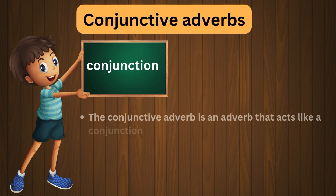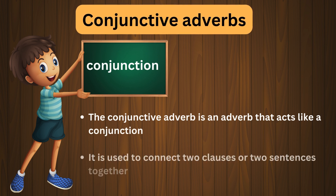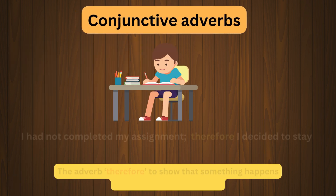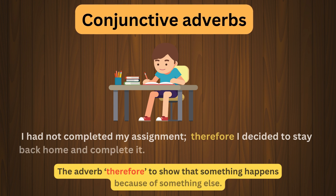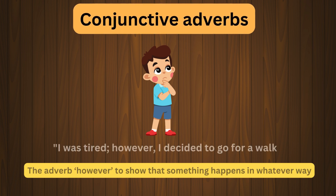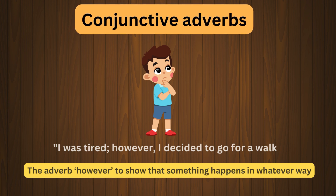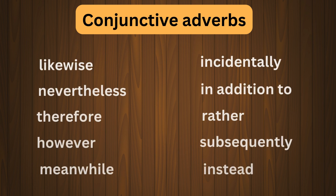Next we see conjunctive adverbs. A conjunctive adverb acts like a conjunction — it is used to connect two clauses or two sentences together. For example: I had not completed my assignment. Therefore, I decided to stay back home and complete it. The adverb 'therefore' shows that something happens because of something else. Next example: I was tired; however, I decided to go for a walk. The adverb 'however' shows that something happens in whatever way. These are some examples of conjunctive adverbs used to link different clauses.